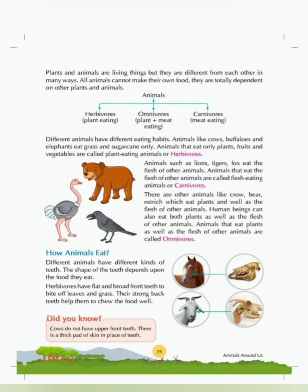Different animals have different kinds of teeth. The shape of the teeth depends upon the food they eat. Herbivores have flat and broad front teeth to bite off leaves and grass. Their strong back teeth help them to chew the food well.